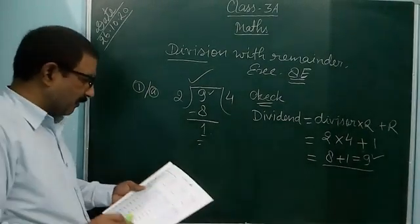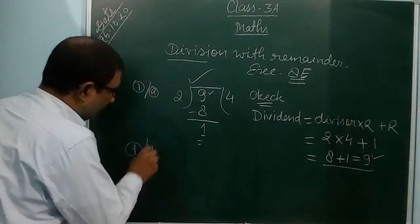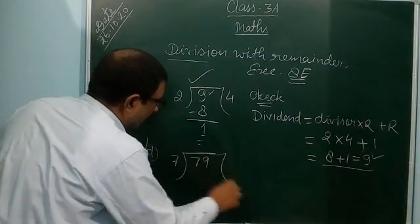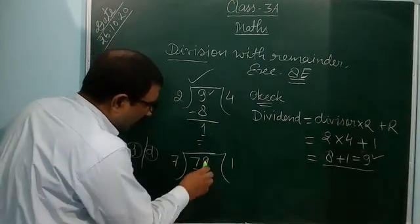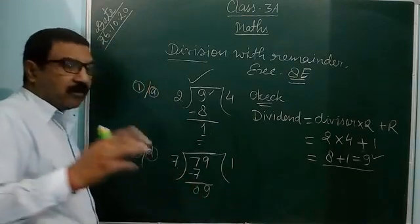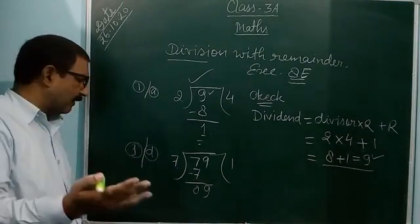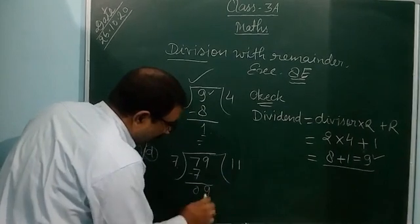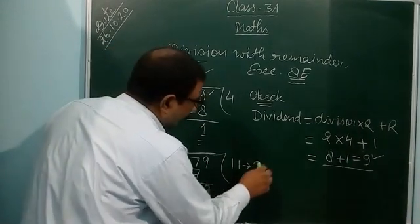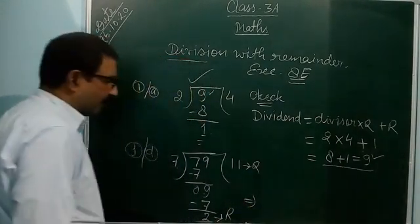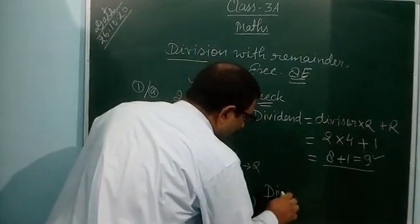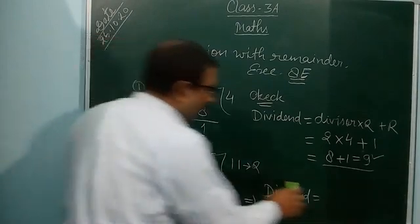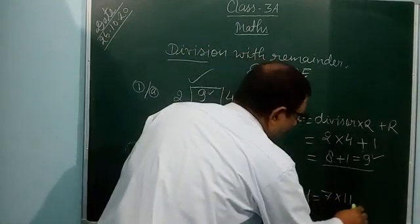Let me explain question 1d. 79 divided by 7. Count the table of 7: 7×1=7, and 7×2=14 which is more than 9, so you take 1 time only. 9 minus 7 equals 2, so the remainder is 2. Bringing down: quotient is 11 and remainder is 2. To check: Dividend = Divisor × Quotient + Remainder, so 7 × 11 + 2.